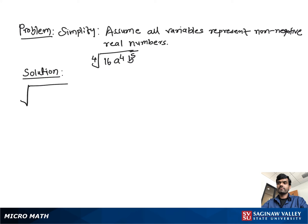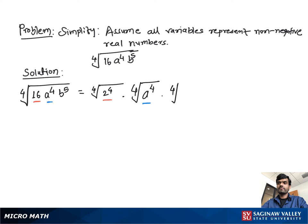Simplify the fourth root of 16a⁴b⁵. We can write this as the fourth root of 2⁴, which is 16, times the fourth root of a⁴, times the fourth root of b⁴, times the fourth root of b. This gives us 2 times the absolute value of a, times the absolute value of b, times the fourth root of b.